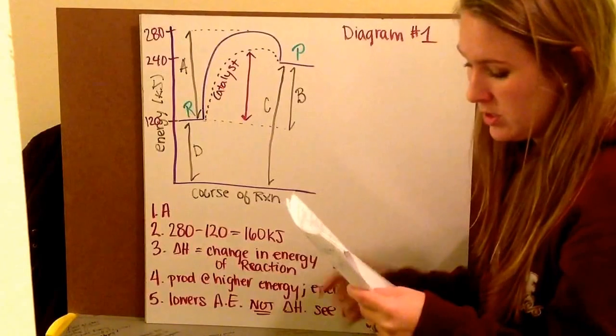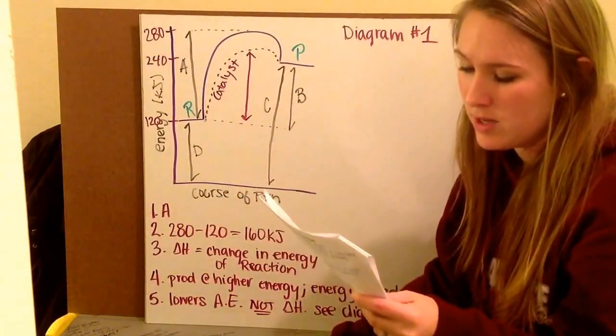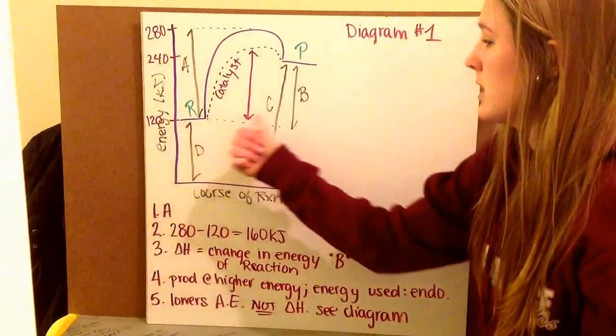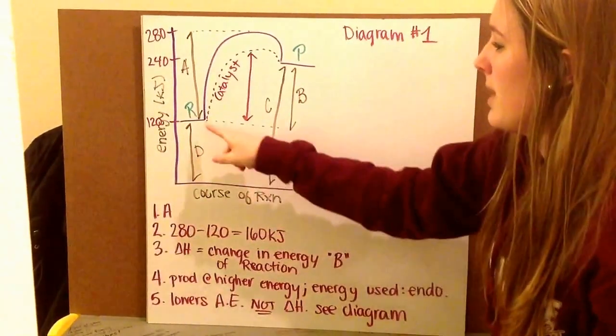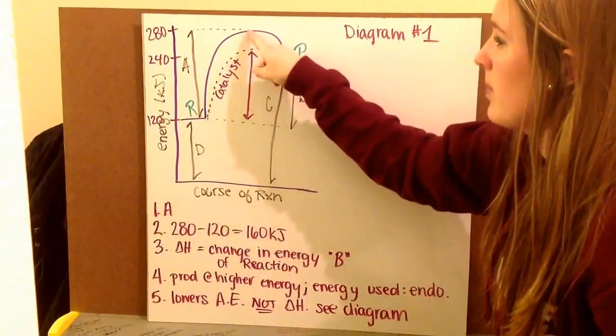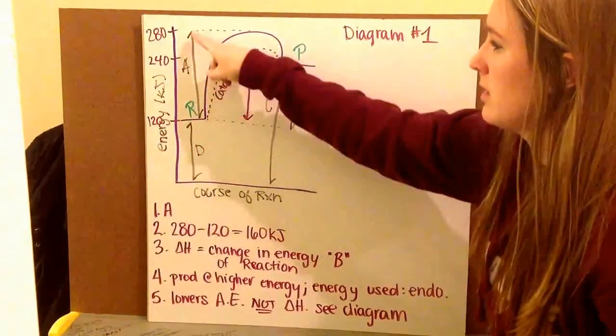Then I need to answer my questions. The first one asks, what letter represents the activation energy for the forward reaction? So that's my reaction going to the right. My activation energy is the difference between my reactants and the top of my peak. So that's this line here. That's A.